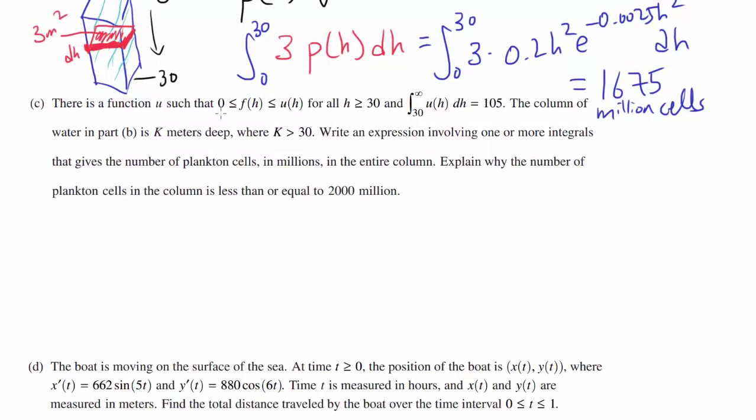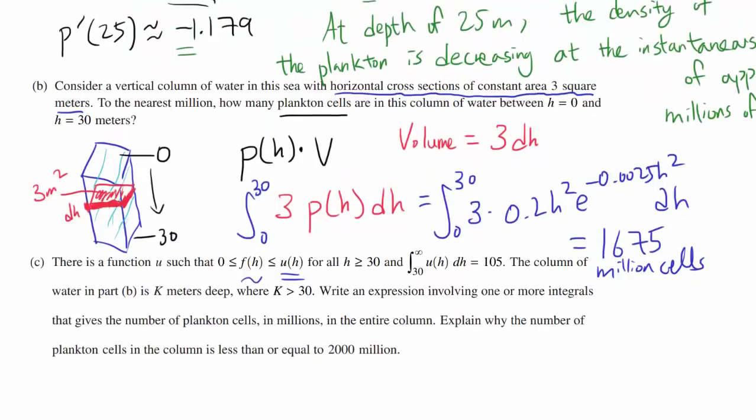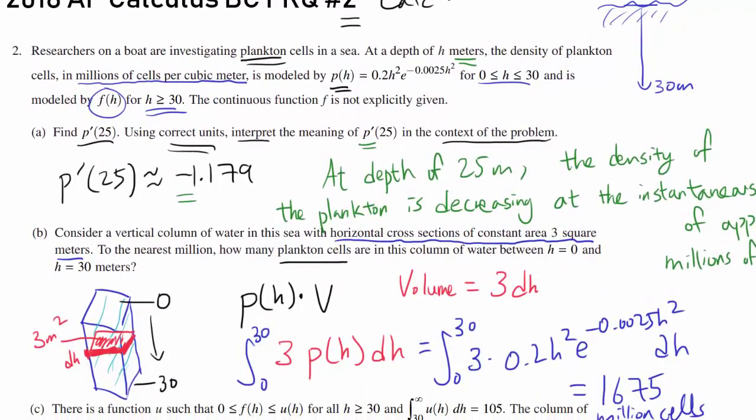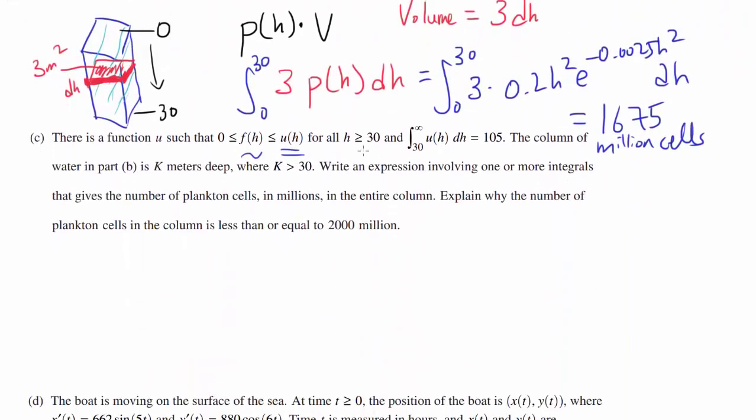Now let's go on to part C. There is a function U such that 0 ≤ F(H) ≤ U(H). What was F again? The F function was the density of the plankton when we're going below 30 meters. After 30 meters, we're not going to use P, we're going to use F. And we know for all H ≥ 30, so we are diving below 30.